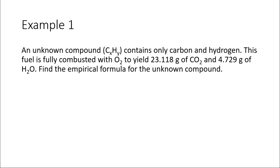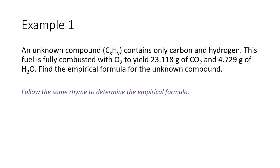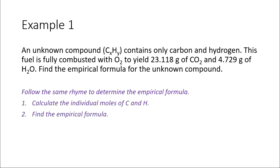Let's take a look at example one. An unknown compound, CxHy, contains only carbon and hydrogen. This fuel is fully combusted with oxygen to yield 23.118 grams of CO2 and 4.729 grams of H2O. Find the empirical formula for this unknown compound. The steps to finding the empirical formula will be similar to steps we've done previously. We're going to first calculate the individual moles of carbon and hydrogen, which are both in our unknown compound — carbon is in carbon dioxide and hydrogen is in water.